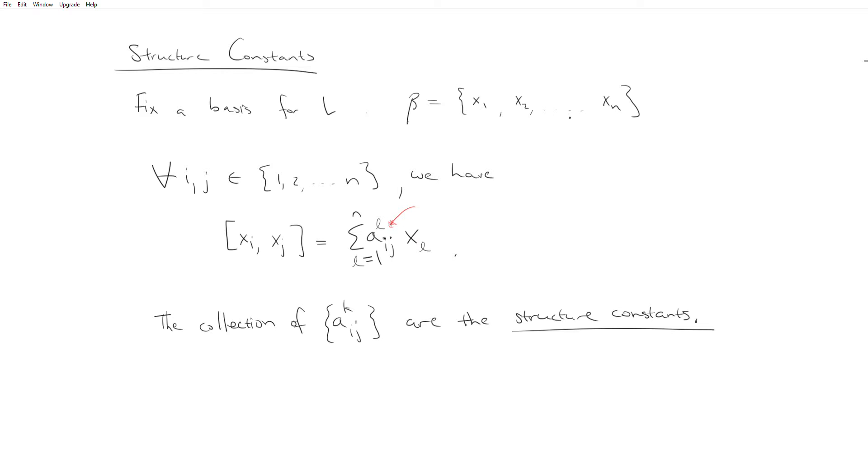Now we know that if we understand the commutation relations for any of the basis vectors, then we can deduce the commutation relations for any vector in the space because of bilinearity and because the basis vectors span the space.